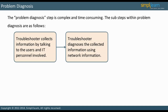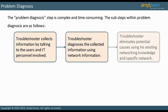Furthermore, network event information such as syslog can also be helpful. At this point, the troubleshooter needs to eliminate potential causes to make troubleshooting more effective. Elimination is based on the information collected in the previous steps. However, eliminating probable causes relies heavily on the troubleshooter's knowledge of networking in general, and his specific network in particular.